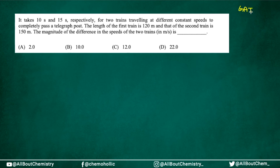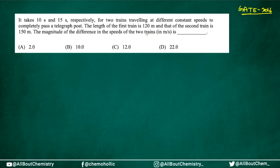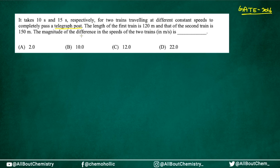This question was asked in GATE 2016. It says: it takes 10 seconds and 15 seconds respectively for two trains traveling at different constant speeds to completely pass a telegraph post. The length of the first train is 120 meters and that of the second train is 150 meters. The magnitude of the difference of the speeds of the two trains is being asked. Since a telegraph post has no width, this is Condition 1 — the distance equals the length of the train.